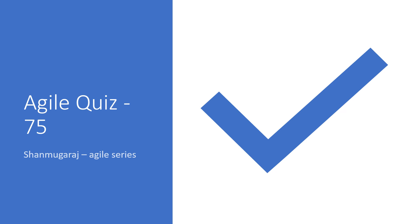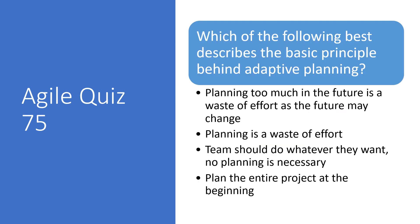Hi everyone, welcome to today's question. This is Shanmugharaj. Today's question is a simple one: which of the following best describes the basic principle behind adaptive planning? The choices are: one, planning too much in the future is a waste of effort as the future may change; two, planning is a waste of effort; three, the team should do whatever they want, no planning is necessary; four, plan the entire project at the beginning.